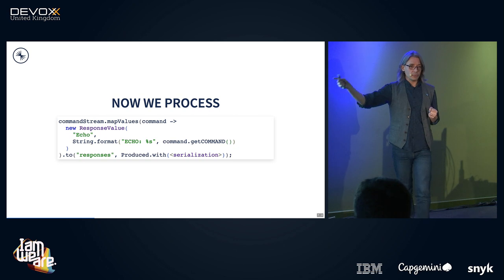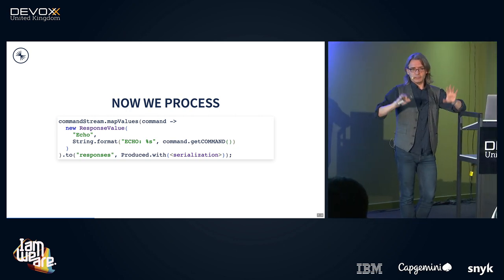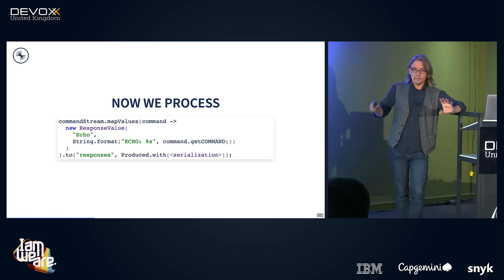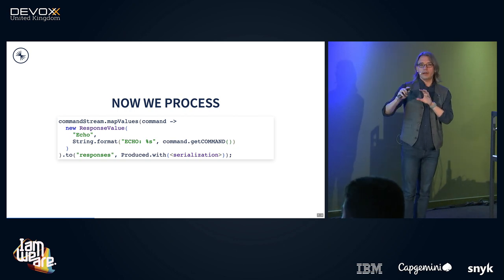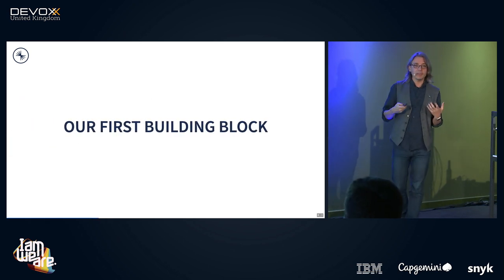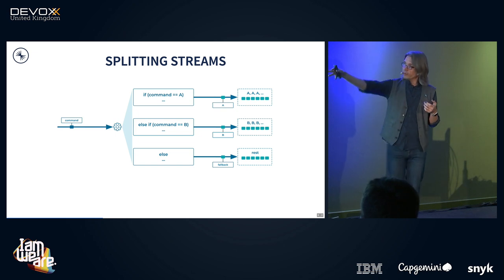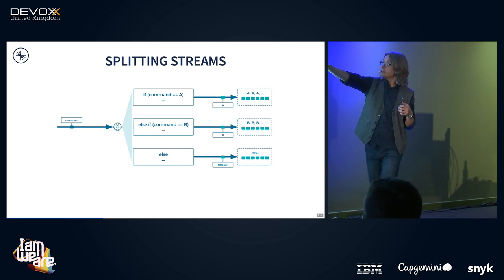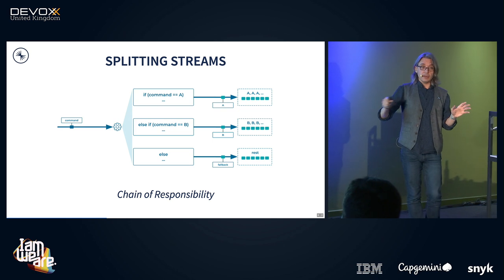The dumb web server then watches for responses generated with the same key. That's the general pattern. How do we turn this into an actual game? The first building block is a way to discern different commands and spread them out for different kinds of processing. We can split streams — semantically it looks a bit like an if-else chain. We test each incoming item to see if a particular processor finds it interesting. If it does, it processes it; otherwise, it leaves it for someone else further down the chain. You get bonus points in a job interview if you call this the chain of responsibility pattern.